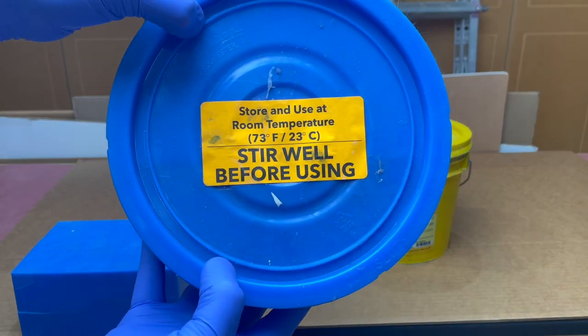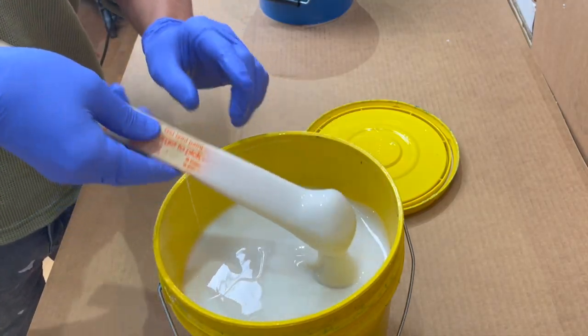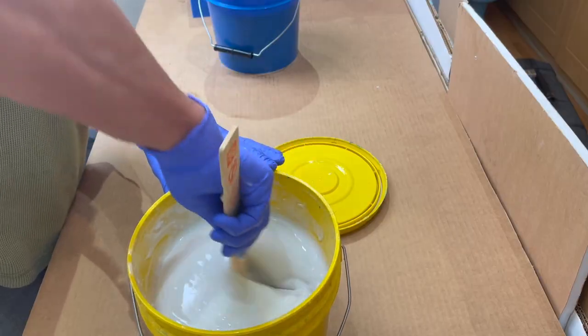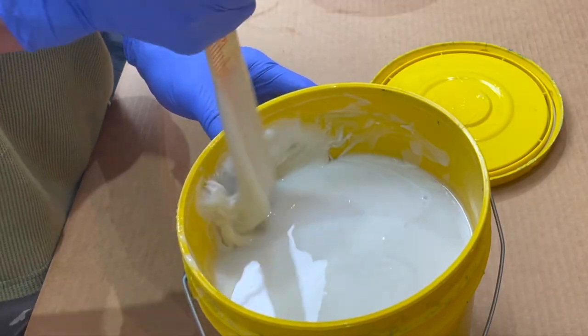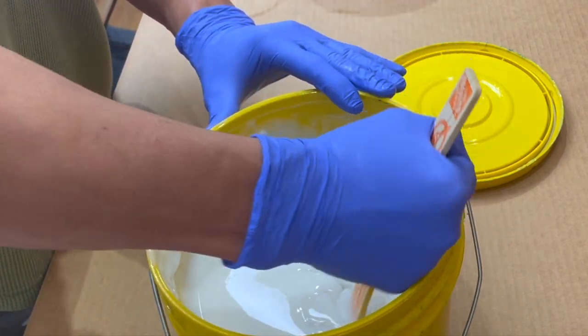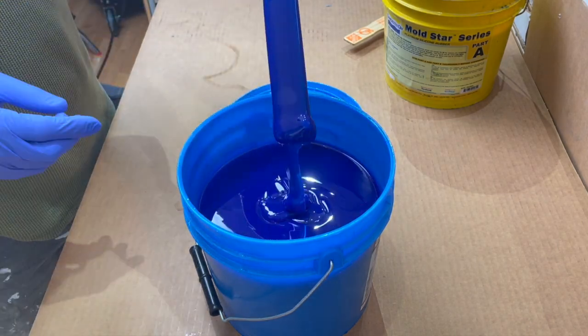Step one is to stir both parts A and B well. Usually you'll feel a thick peanut butter layer on the bottom, especially if the buckets have been sitting for a while. You need to mix this thoroughly. I like to pull it up and scrape it on the sides and then mix it back in. The white part A is always worse than the blue part B but there is some on the blue side so make sure you get both parts.